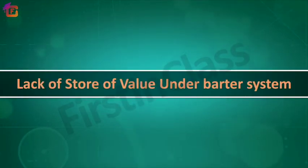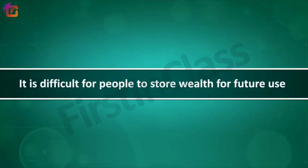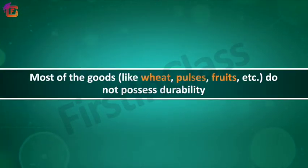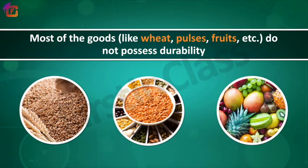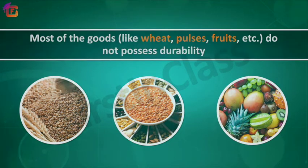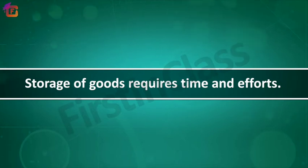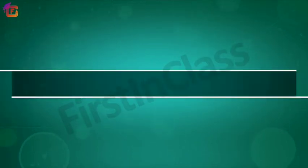So it is very difficult to make deferred payments in the form of goods. Next is lack of store of value. Under the barter system, it is difficult for people to store wealth for future use because most goods like wheat, pulses, and fruits do not possess durability — their quality deteriorates with passage of time — and storage of goods requires time and effort.